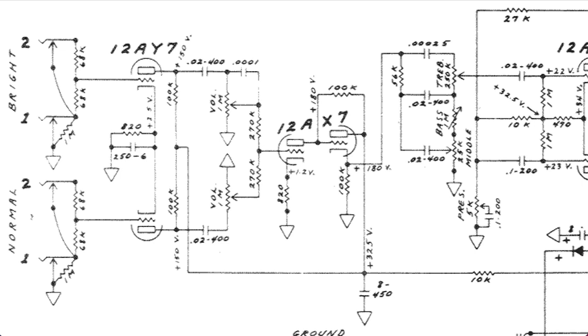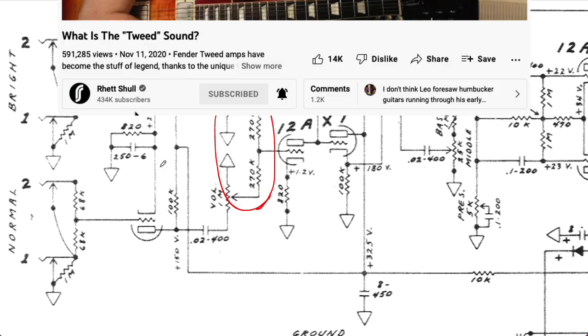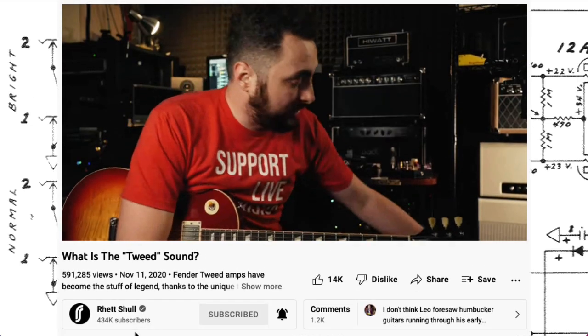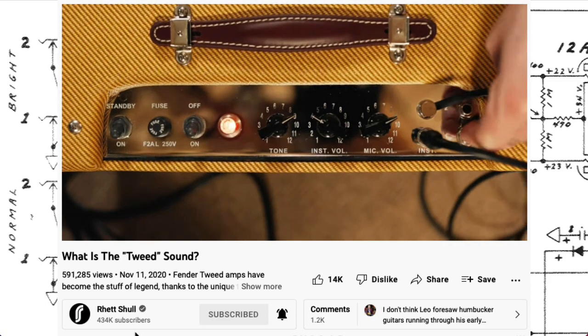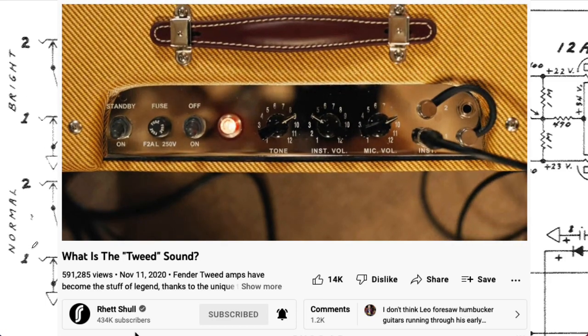Zooming in a bit, we see that there's actually three preamp stages, although in general, you only use two of them in series. You can plug into the bright channel, which includes this common cathode stage and then this common cathode stage. Or you can plug into the normal channel, which has a separate common cathode stage that then goes to the second common cathode stage. You can actually plug two different instruments into these two channels and it will mix the results. Another thing musicians would do is actually strap the inputs together to put your signal into both the bright and the normal inputs at the same time.